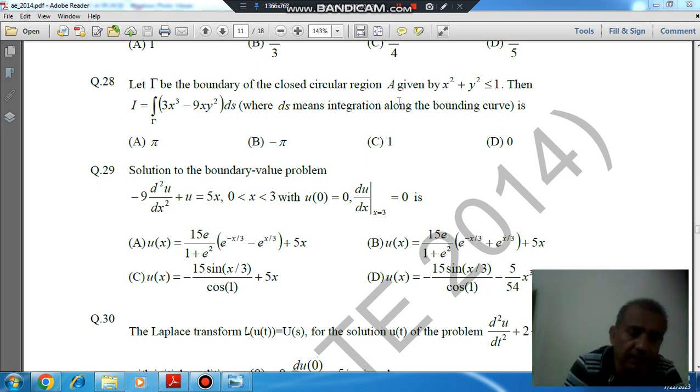Hello, welcome again. We are solving K214 in aerospace engineering paper. Question number 28 is: Let τ be the boundary of the closed circular region A given by x² + y² ≤ 1, then the integration of (3x³ - 9xy²) ds, where ds means integration along the bounding curve. Options are: (A) π, (B) -π, (C) 1, and (D) 0.